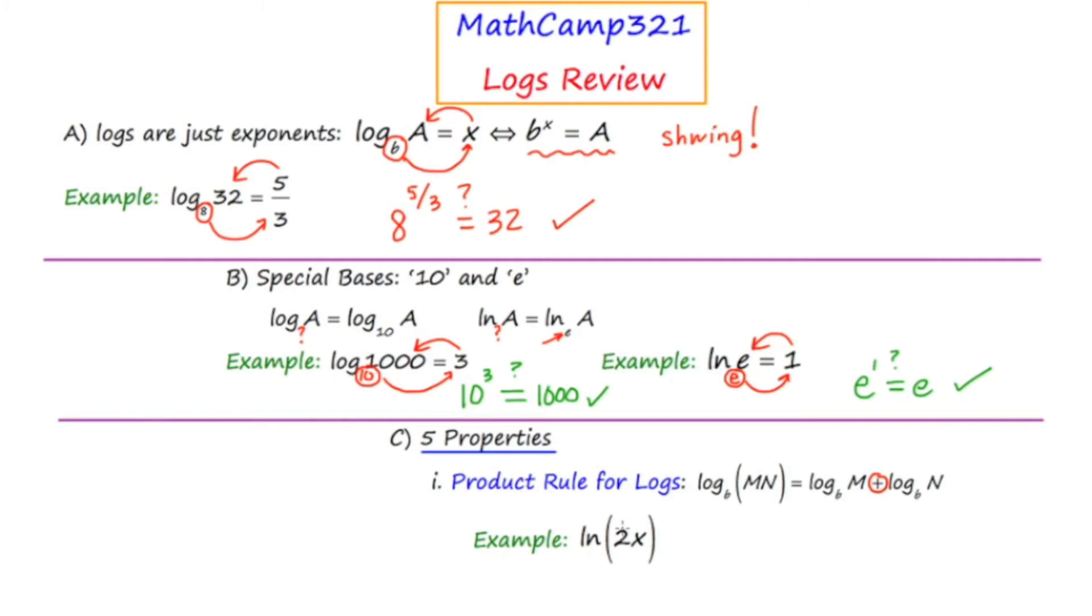And I've provided an example here. Suppose we wanted to apply the product rule for logs to this natural log expression. Well, we've got two factors here, a 2 and an x. So I can rewrite this as the natural log of 2, 2 being the first factor, plus the natural log of the second factor, or the natural log of x. So this would be the answer to that simplification using the product rule for logs.